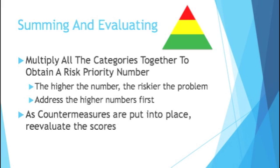As mentioned, you multiply your severity, your occurrence, and your detectability to end up with your risk priority number. The higher the RPN, the riskier the problem. This gives you a framework for how to address internal problems, because a lot of times internal problems become external ones. Customers often want to see your FMEAs as evidence of a countermeasure you put into place — as a fix to a problem. But if it hasn't reached the customer yet and you want to address things internally, address the higher numbers first, as those pose the greatest risk.